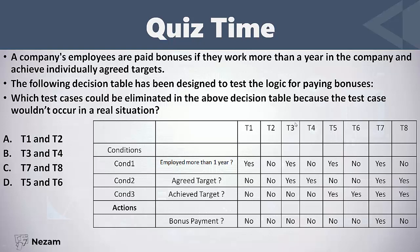Test case number one: this person is employed more than one year, he did not agree on a target, and he did not achieve a target — so he will not get a bonus. This is logical. The second one: a person who is not employed more than one year, he did not agree on a target, and he did not achieve any target — this is logical, he will not get any payment.